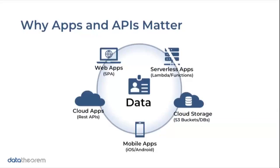Why do apps and APIs matter? Going back to the British Airways example — this was a two-week vulnerability in a web app and a mobile app that led to the data compromise they experienced. In a digital world, the way we interact with our consumers is through web applications, cloud apps, mobile apps, and even serverless applications. This is how we're typically collecting, interacting, and sharing personal and consumer data. The APIs behind all these applications are how they exchange data, so we have to look at both the applications and the APIs.